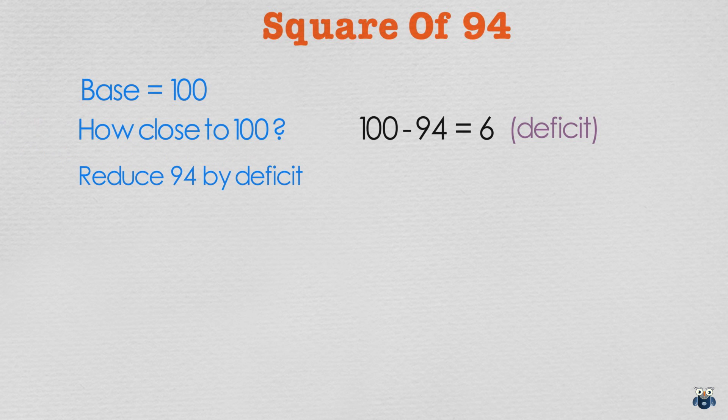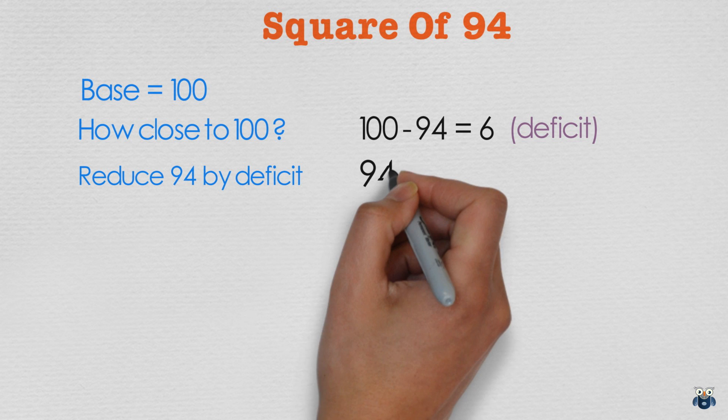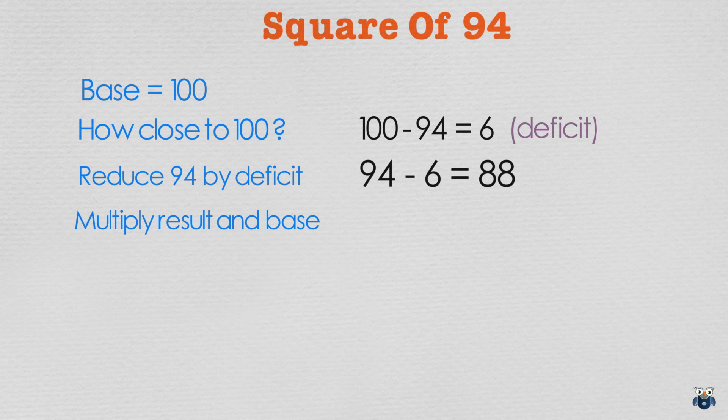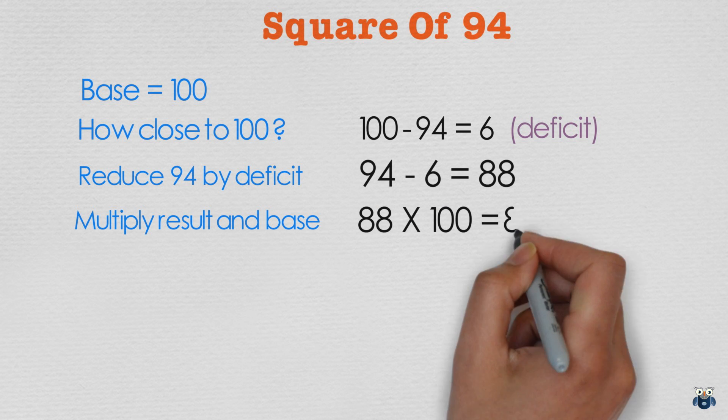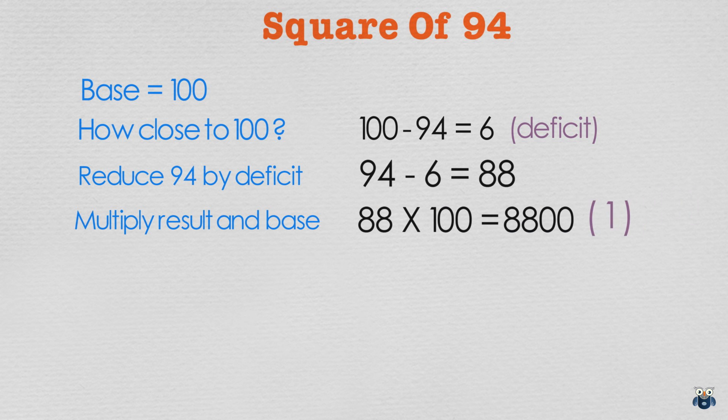Since 94 is less than our base, we reduce it by the deficit. 94 minus 6 is 88. We then multiply this result by the base. 88 times 100 is 8800.